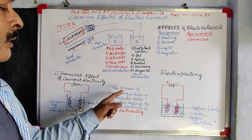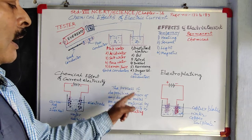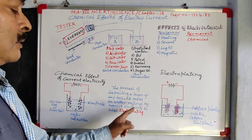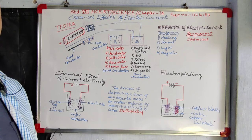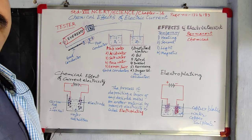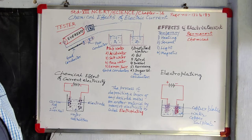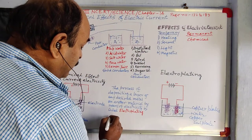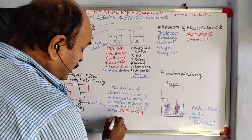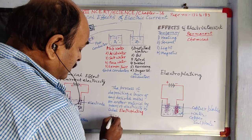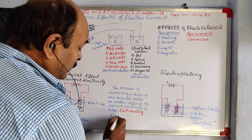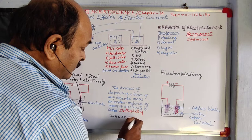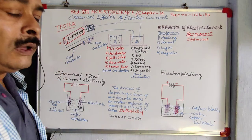That depositing of another metal onto another substance is called electroplating. The process of depositing a layer of any desired metal on another material by means of electricity is called electroplating. For example, if we do electroplating of zinc on iron...